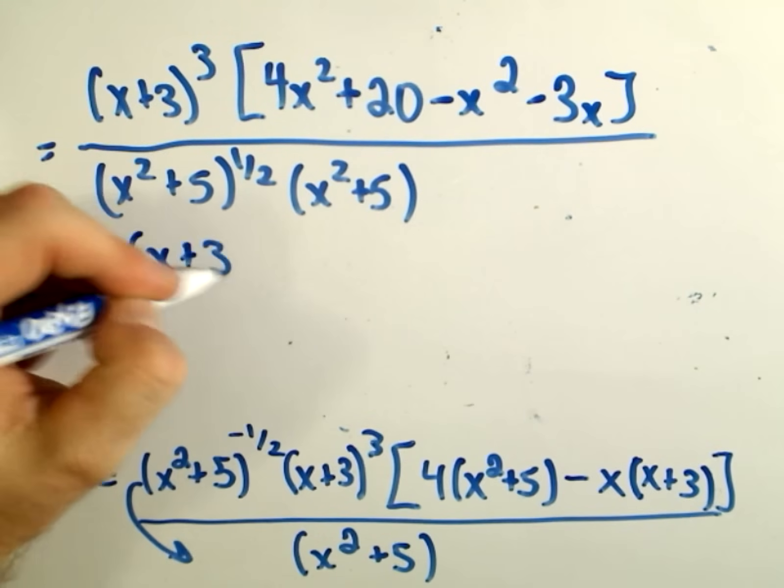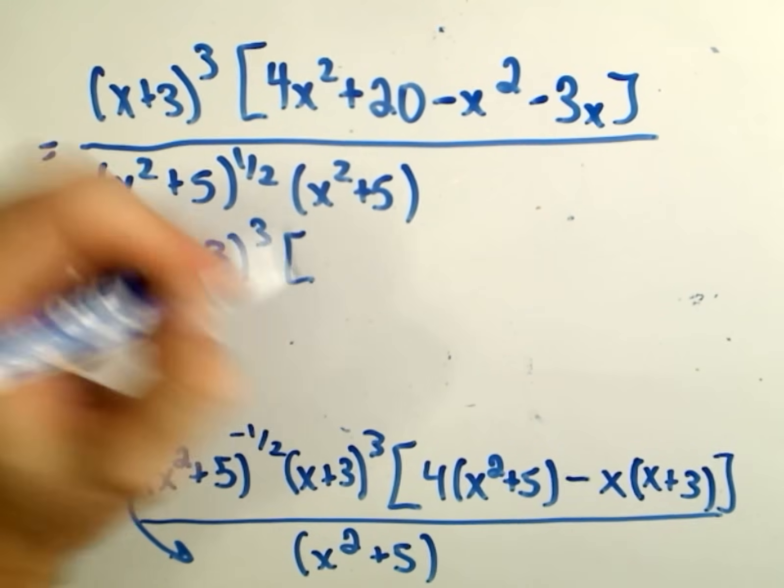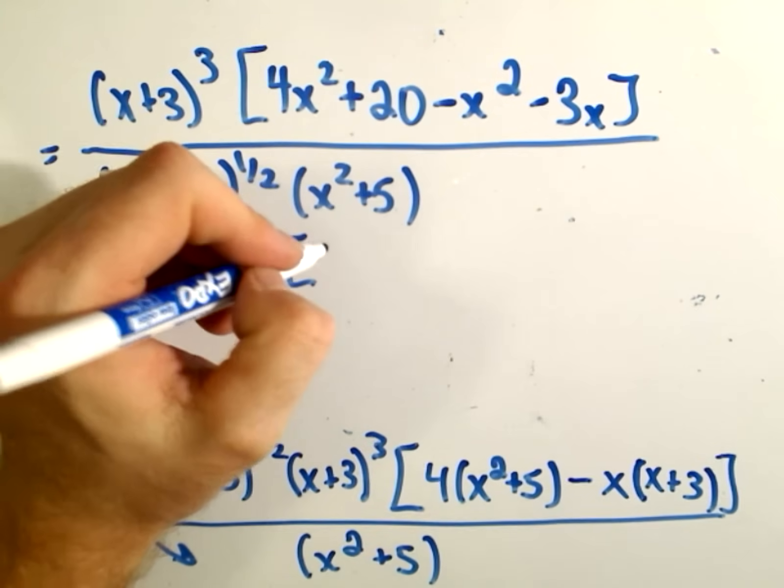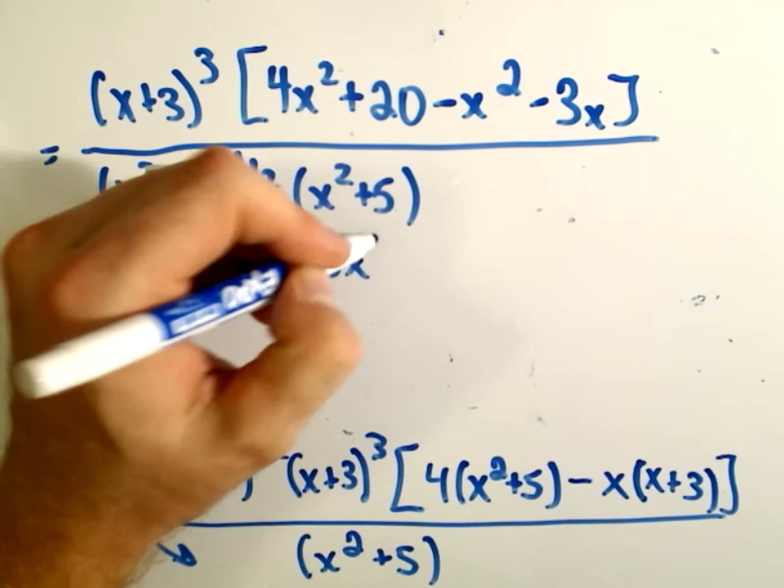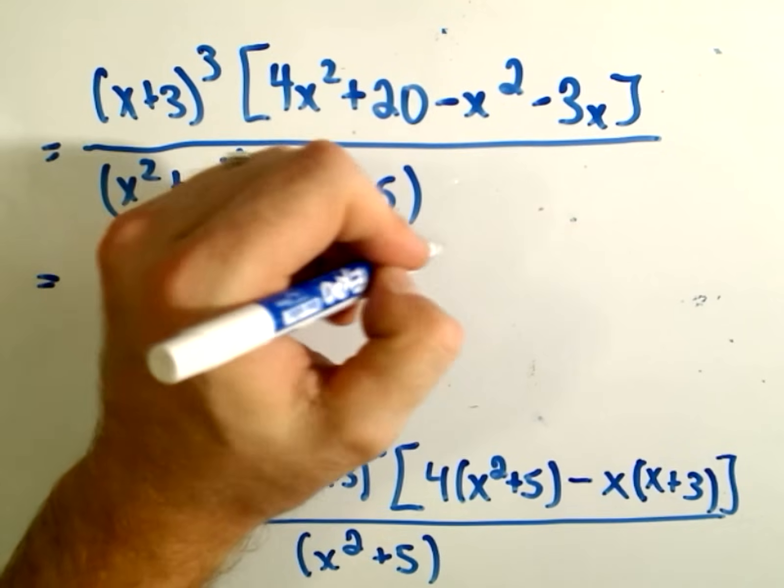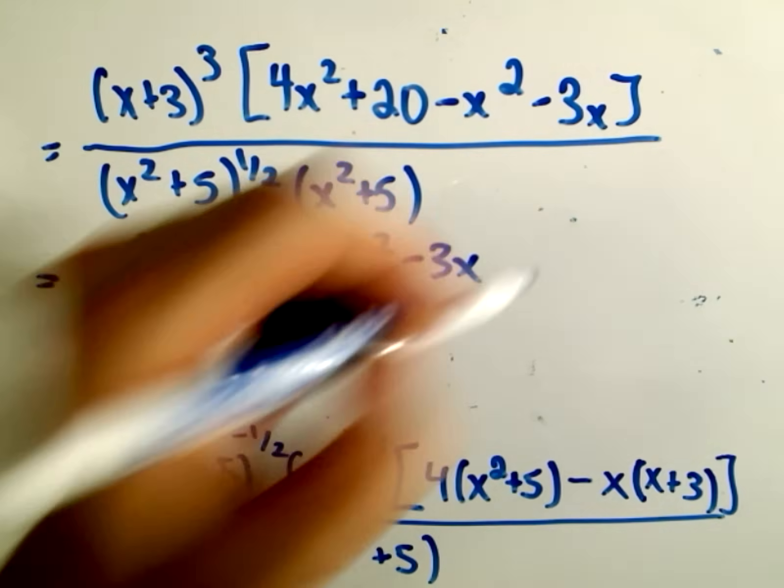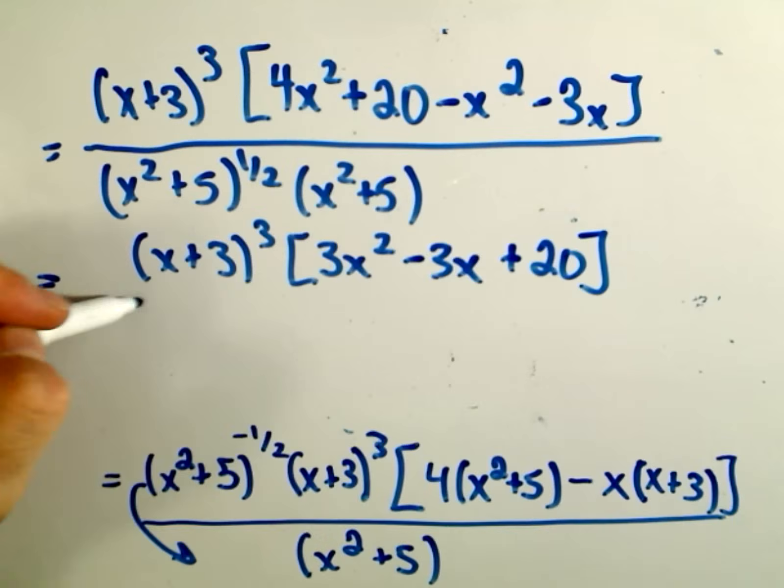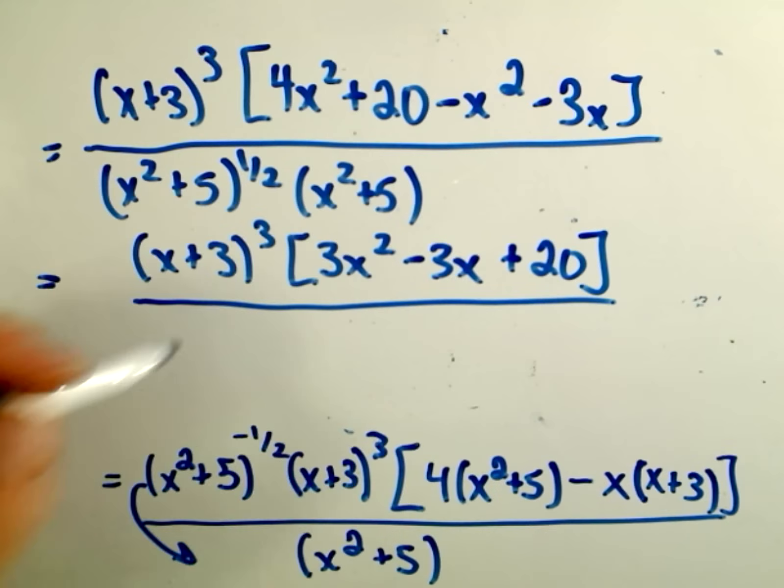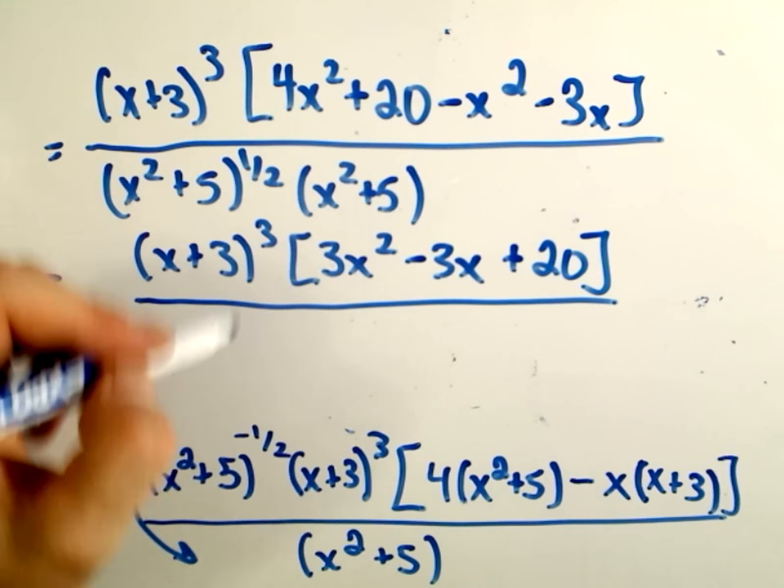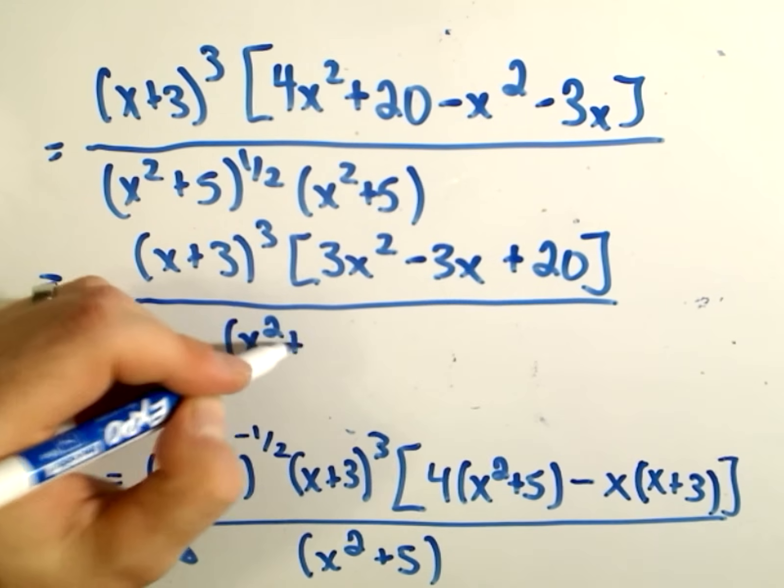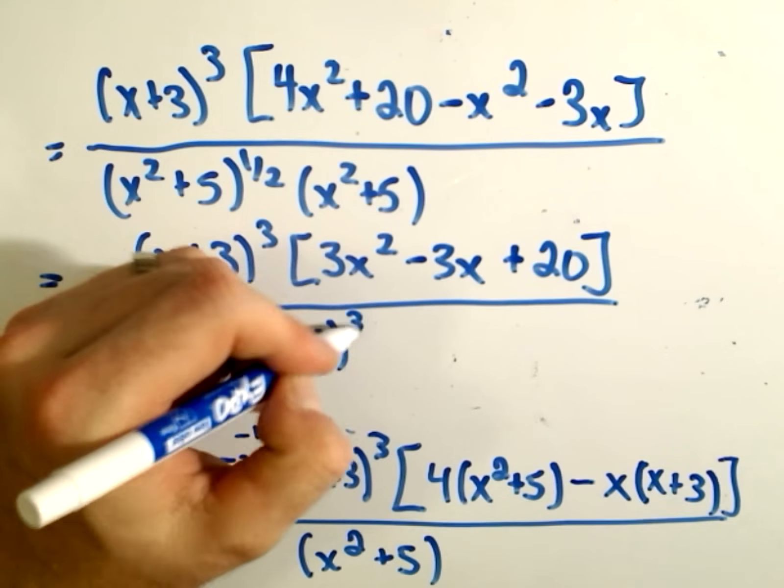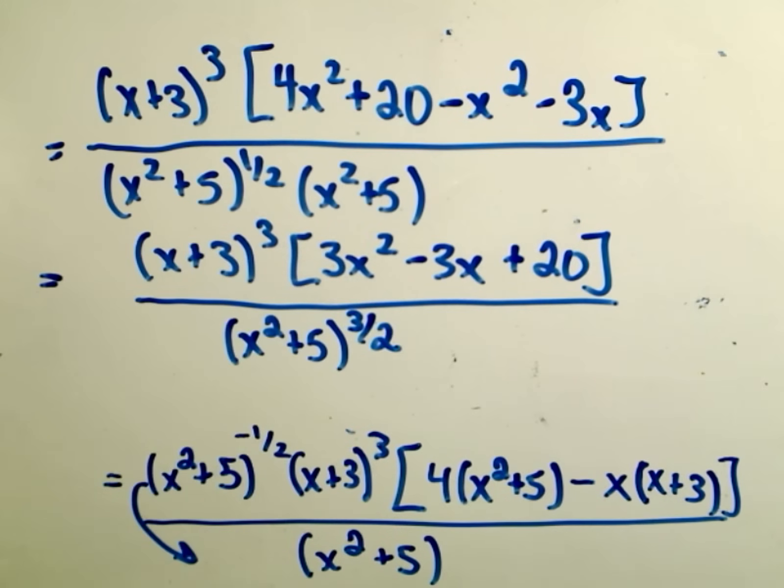So we've got x plus 3 cubed. On the inside, 4x squared minus 3x, excuse me, minus x squared is 3x squared. Then I'm going to write my minus 3x. And then I'm going to write my plus 20. Oh, I sure hope this thing doesn't somehow factor down. We'll multiply. Again, we'll add the exponents. So we can write the denominator as to the 3 halves power.